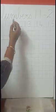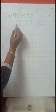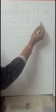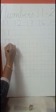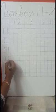Now children, we are going to write numbers from 11 to 20. 11. Leave one box, 12. Leave one box, 13. Leave one box, 14. Leave one box, 15. Same way, come down, leave two boxes, write 11. One number in one box.